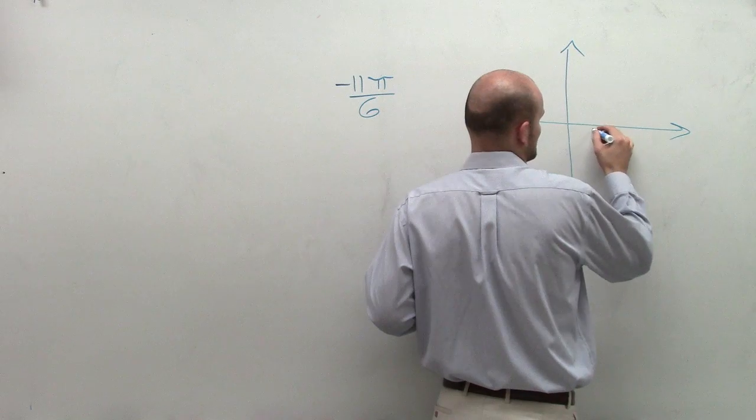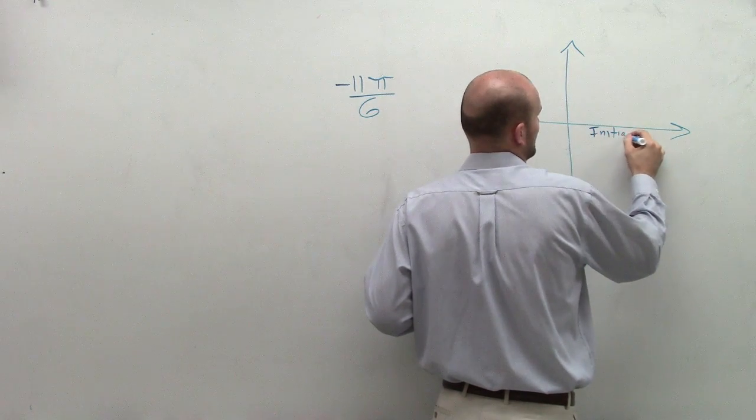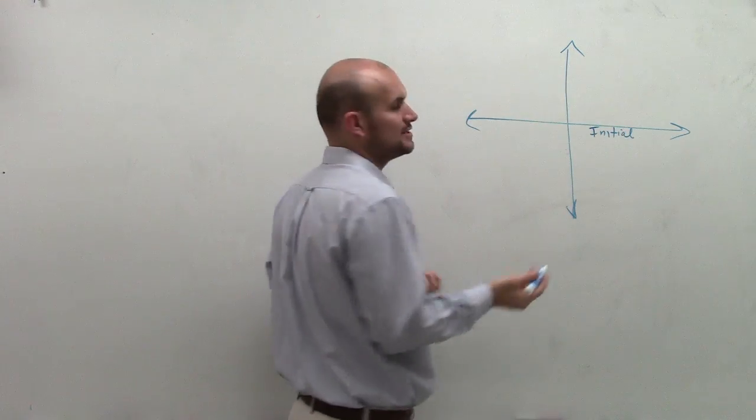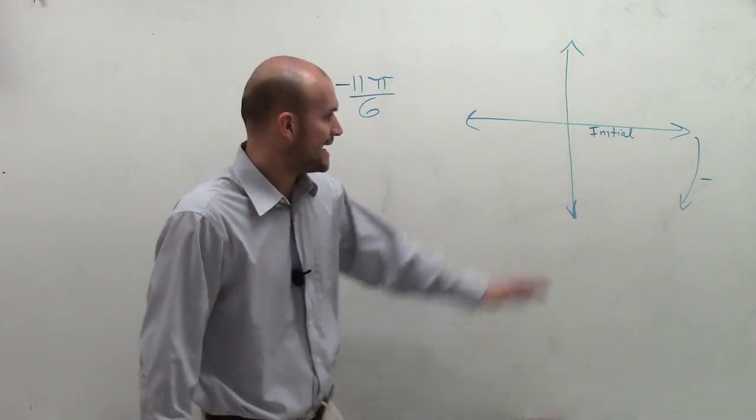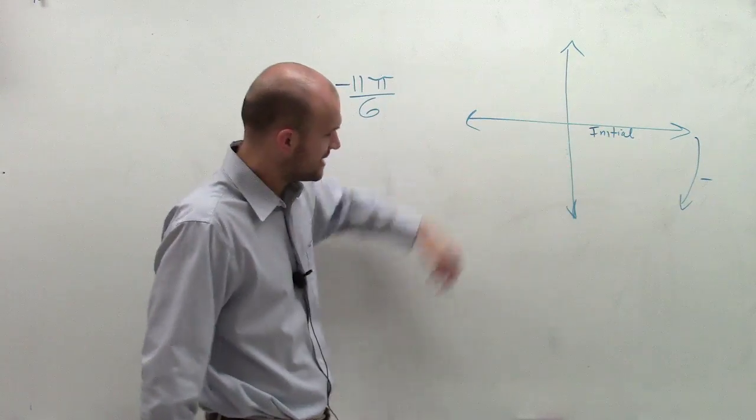So first of all, remember, here's our initial side. When we're in standard form, there's our initial side and we need to find our terminal side. Well, since that's negative, that means I'm going to go down in my negative direction. So my angle is going to open up in the downward direction.